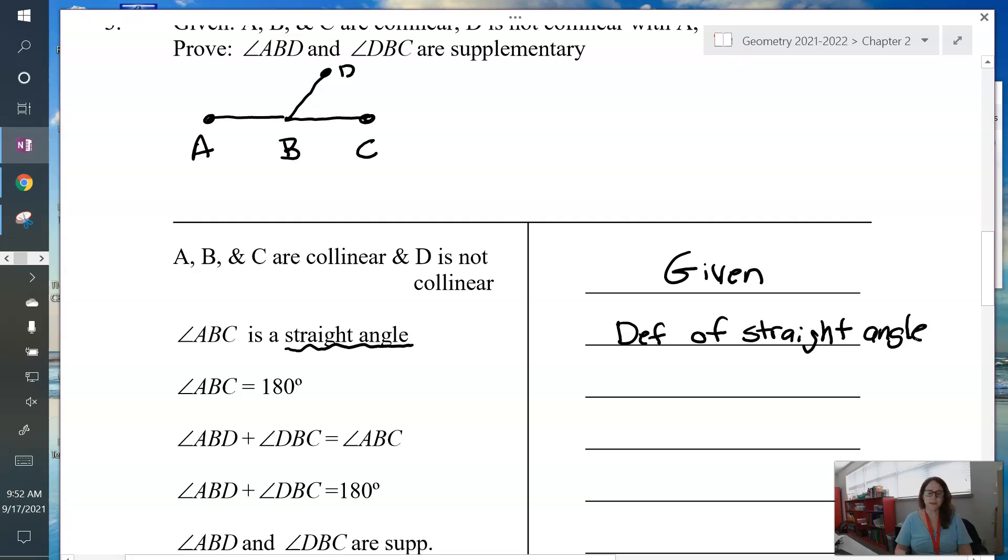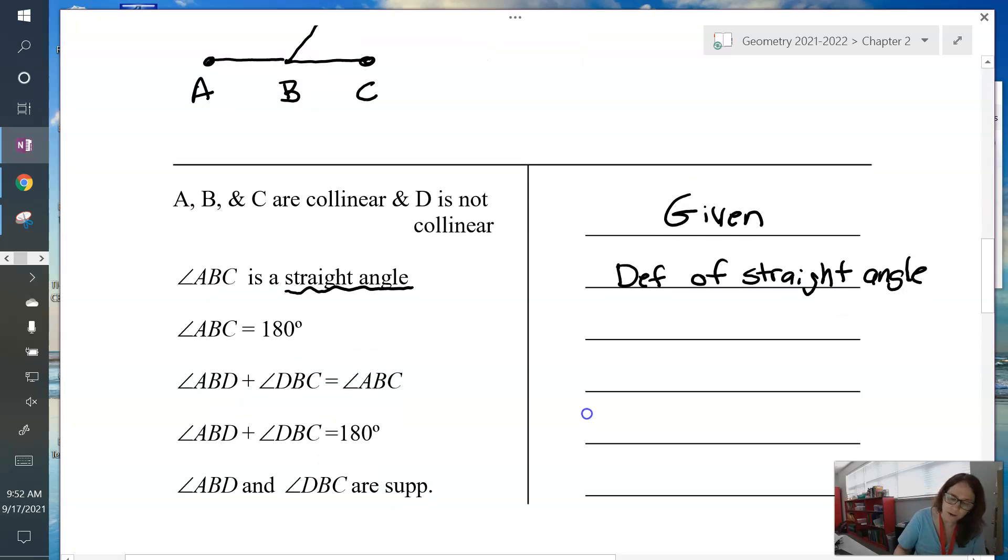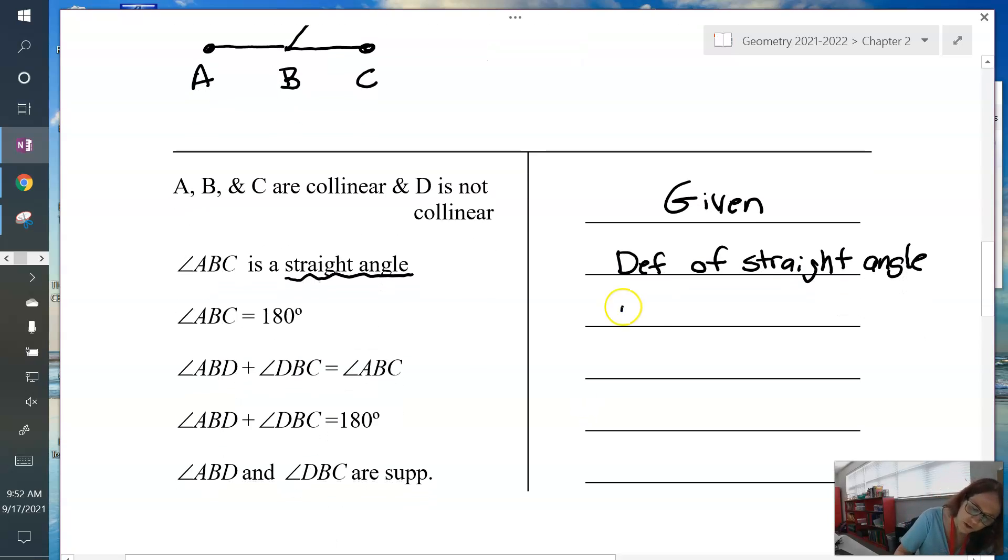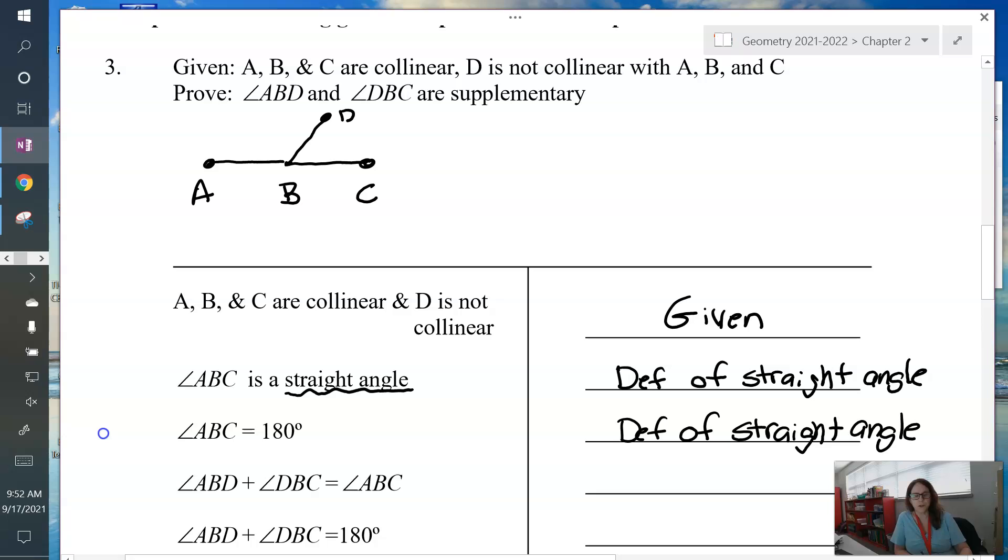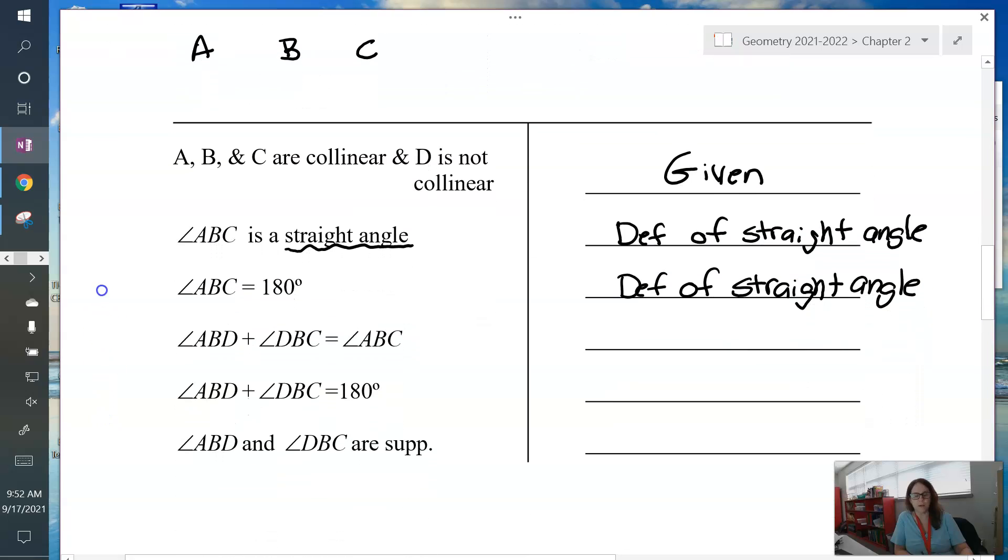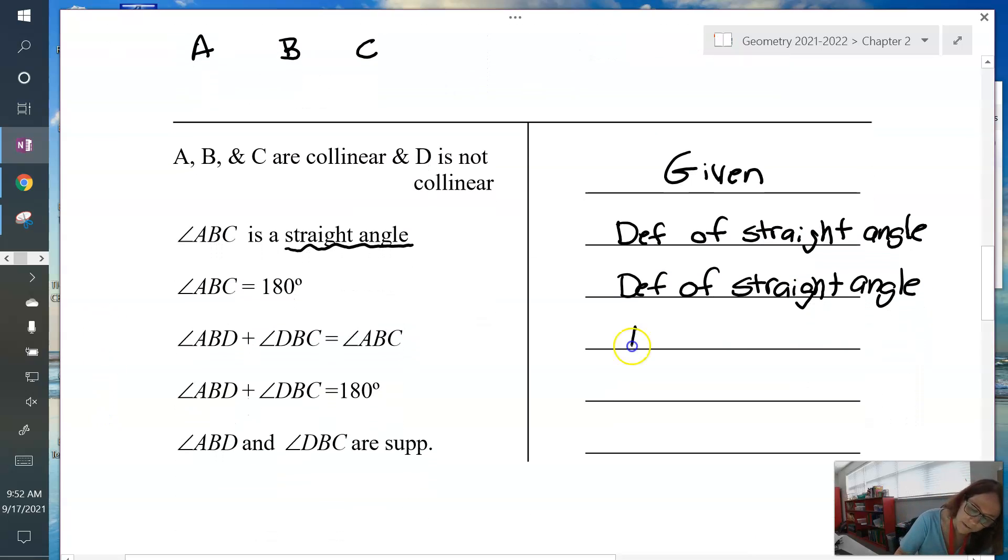Next one, angle ABC is 180 degrees. We know that comes from straight angles are 180 degrees. So we have another definition of straight angle. The next statement says ABD plus DBC equals ABC. Look at your picture. If I add those angles together, I do get that big outside angle. So this is angle addition postulate.